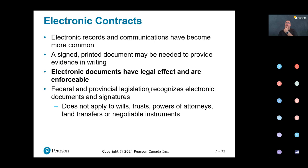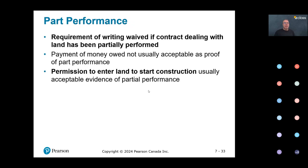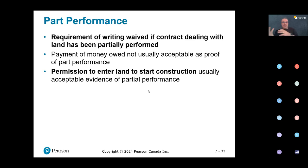So two examples that must be in writing: transfer of land and guarantees. There are others, including contracts longer than one year. Remember: if there's no written component, the contract is not illegal — it's legal but not enforceable in court. There is an exception for partial performance. For a land contract done verbally: if you have given me access to the property to start renovations, a court would consider that partial performance and could allow enforcement of the contract even without a written piece.